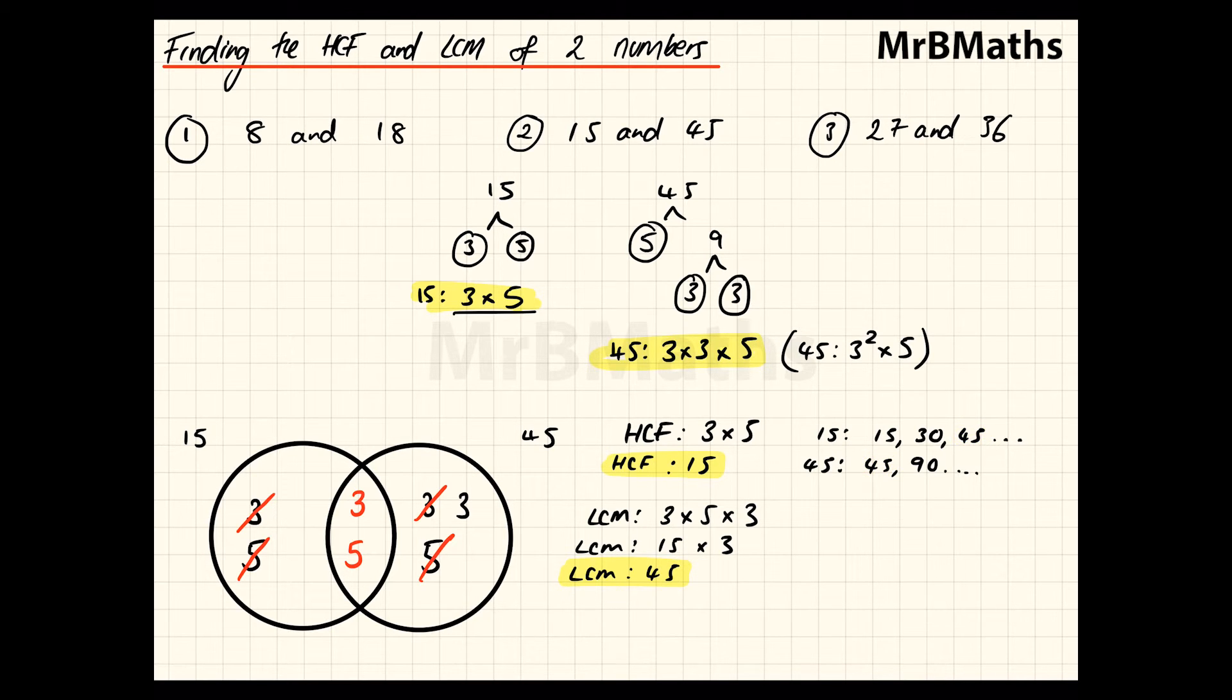And the same goes for the highest common factor. So, it's the highest number that goes into 15 and 45. Now, obviously, it can't be any higher than the lowest number. So, the HCF couldn't be 30, because 30 wouldn't go into 15. So, the HCF being 15. So, 15 goes into 15 once, and then 15 would go into 45 three times. So, that's the highest number that goes into both of them. Not just one. Both.